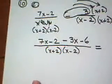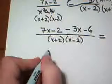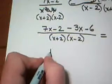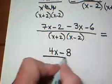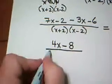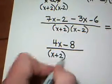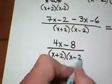We work with the numerators. The numerator becomes, when I collect like terms, it becomes 4x minus 8. The denominator is x plus 2, times the quantity x minus 2.